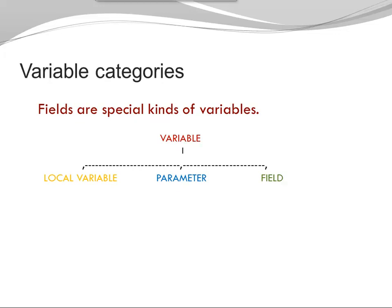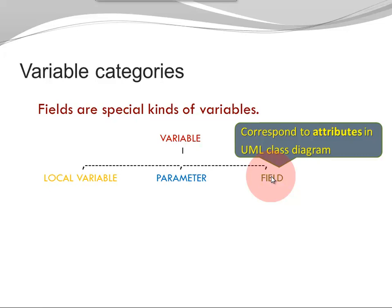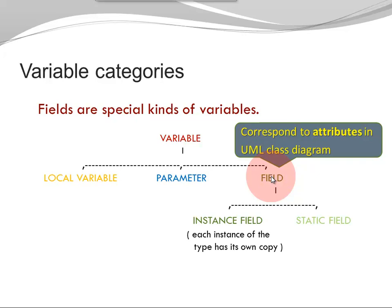Fields are special kinds of variables. You can categorize variables into local variables, parameters, and fields. Fields correspond to attributes in the UML class diagram, and they can be further divided into instance fields and static fields. Notice how static fields are grayed out. I want you to know that they exist, but in this video, we focus on instance fields.